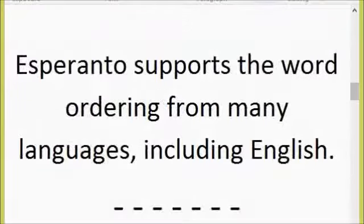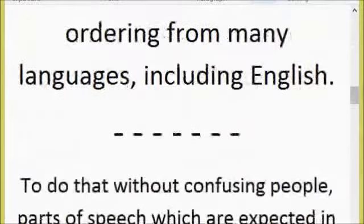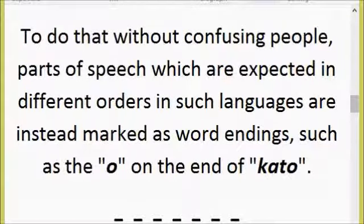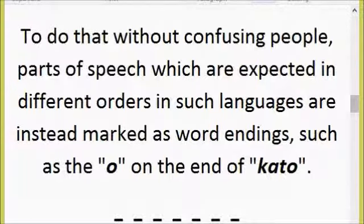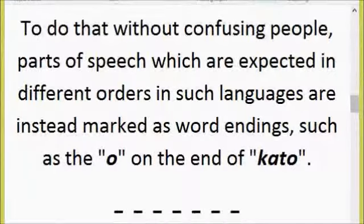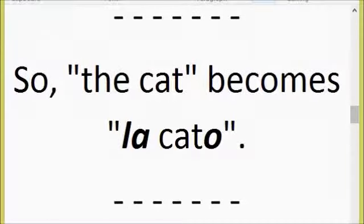Esperanto supports the word order from many languages, including English. To do that without confusing people, parts of speech which are expected in different orders in such languages are instead marked as word endings, such as the 'o' on the end of 'catto'. Notice, as I mentioned, 'la cat' would actually be 'la catto' in Esperanto. If we wanted full Esperanto, 'catto' ends in an 'o' — that marks it as a noun. So the cat becomes 'la catto'.